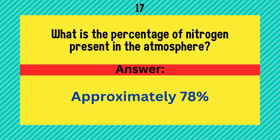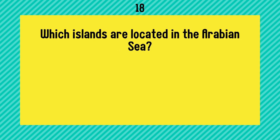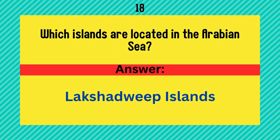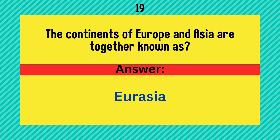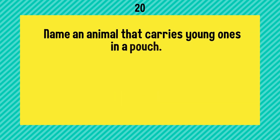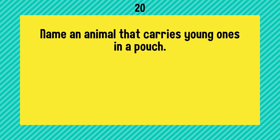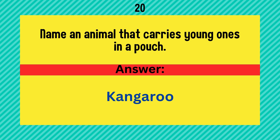Approximately 78%. Which islands are located in the Arabian Sea? Lakshadweep Islands. The continents of Europe and Asia are together known as? Answer is Eurasia. Name an animal that carries young ones in a pouch. Answer is kangaroo.